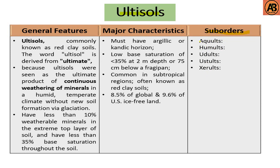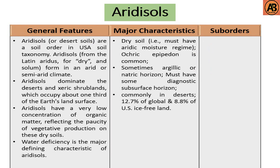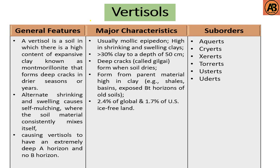The sub-orders of Ultisols are Aquults, Humults, Udults, Ustults, Xerults, etc. Here are the major characteristics and general features of Ultisols. Aridisols have no sub-orders listed, and here are the major characteristics and general features of Aridisols.